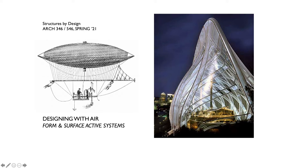Tension structures — cables, membranes, and pneumatics — are lightweight and expressive three-dimensional building elements that are advantageous for long-span structures. Their litheness also presents critical challenges when enclosing spaces because of relative instability. Finding and developing building forms, materials, and details responsive to these challenges creates a uniquely expressive set of building structures, particularly when designing with air.